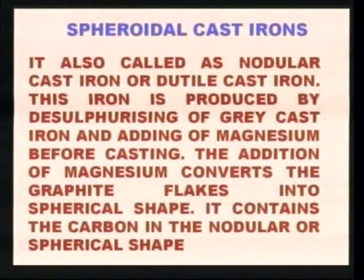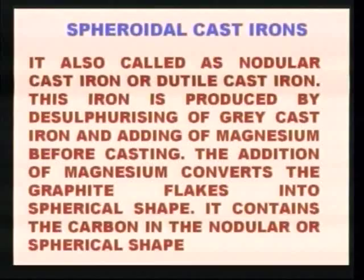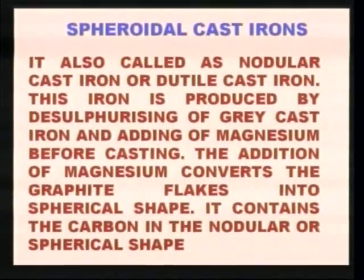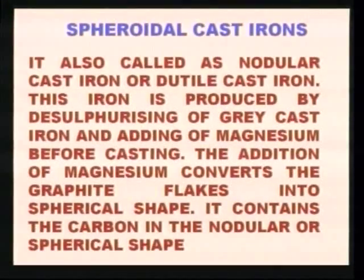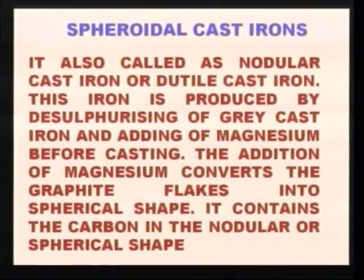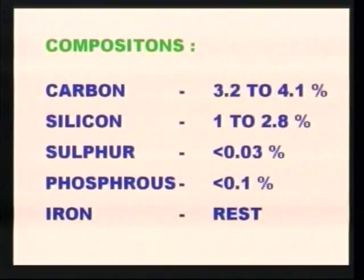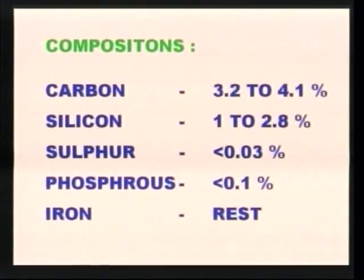The last type is spheroidal cast iron, also called nodular cast iron or ductile cast iron. It is produced by desulphurizing grey cast iron and adding magnesium before casting. The addition of magnesium converts the graphite flakes into spherical shape. Its composition is: carbon 3.2 to 4.1 percent, silicon 1 to 2.8 percent, sulphur less than 0.03 percent, phosphorus less than 0.1 percent, and the remaining is iron.